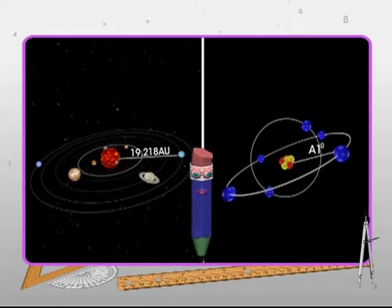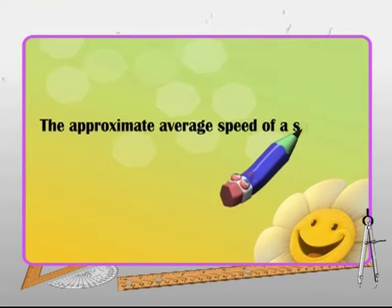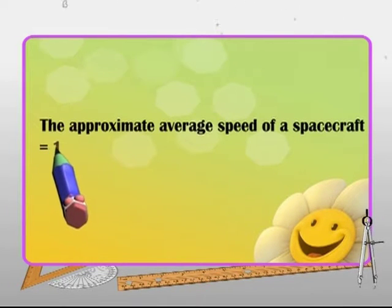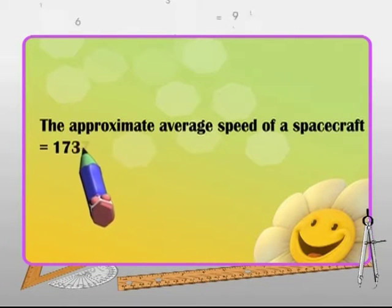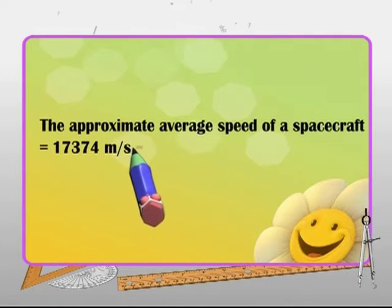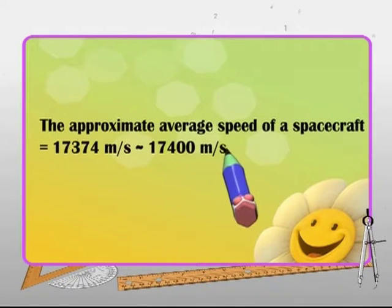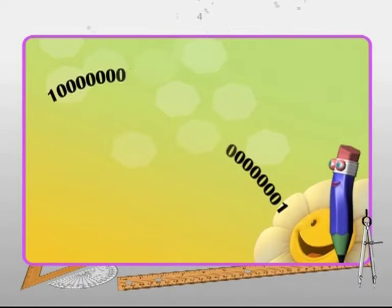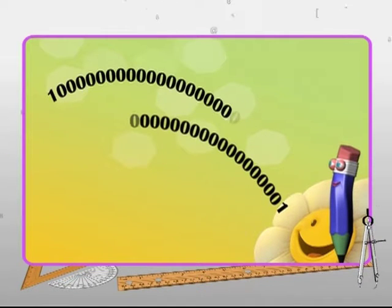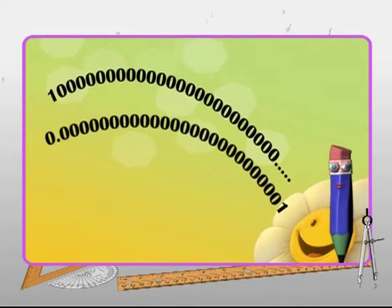Many measurements in modern scientific fields involve very large and very small numbers. The approximate average speed of a spacecraft is equal to 17,374 meters per second. This can be conveniently approximated to 17,400 meters per second. Every number, large or small, can be expressed in decimal form as the product of a number between 1 and 10 and an integral power of 10.